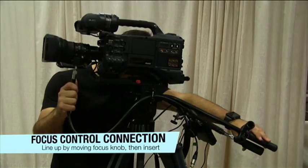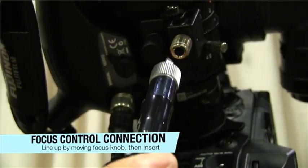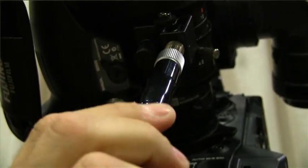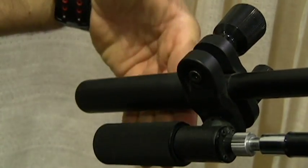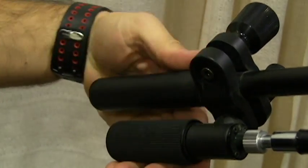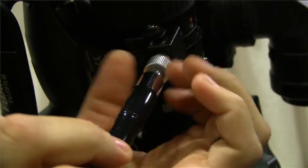Next, we'll connect the focus control. You have to line up the end of the cable with the connection for it to insert. You may need to turn the focus control on the pan handle in order for the connection to line up. Tighten the connection once you're able to insert it.